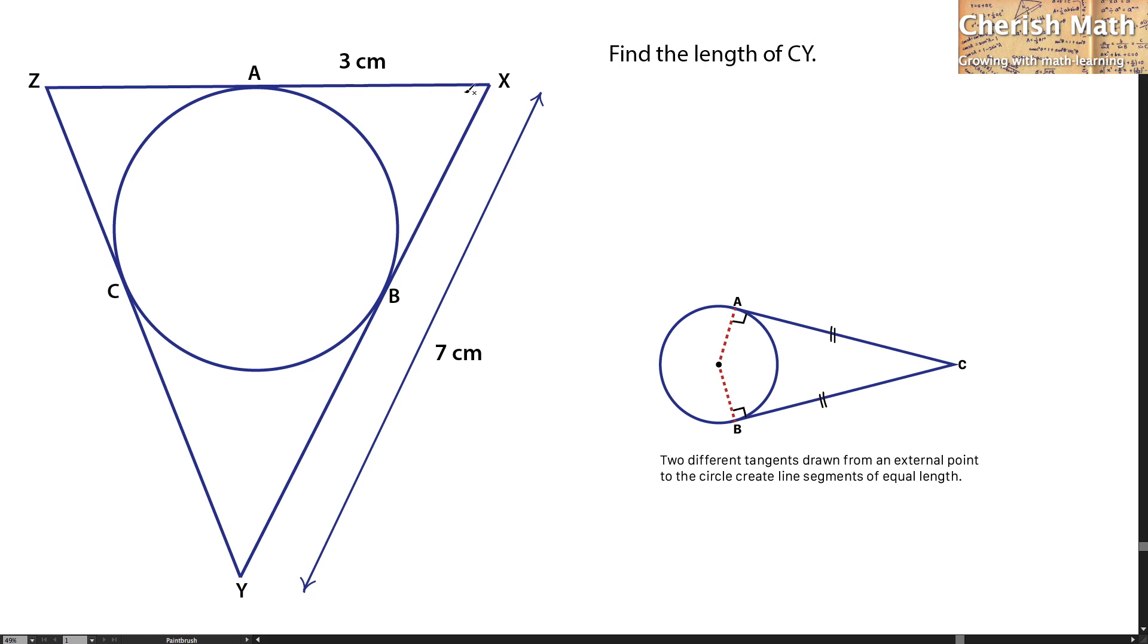For the lines AX and BX, they are same in length, simply because both lines are tangent to the circle from the external point X. So, I know this is 3.